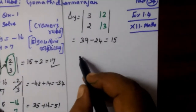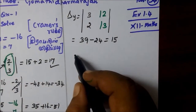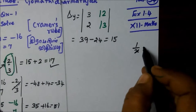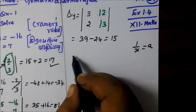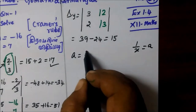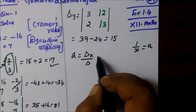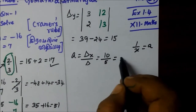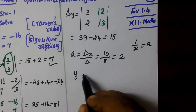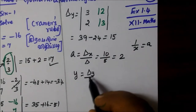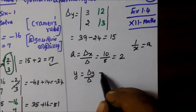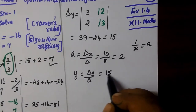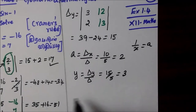So, del x equal to 15. So we have x value and y value. Since 1 by x is equal to a, we need the a value. So a is equal to del x by delta. Del x is equal to 10, then delta is equal to 5. So a equal to 2. We need y. So y equal to del y by delta. So 15 by 5.